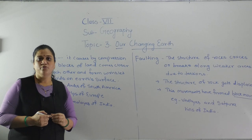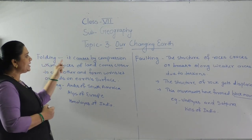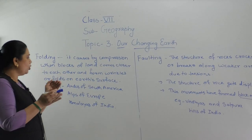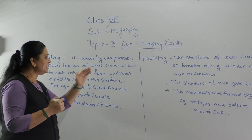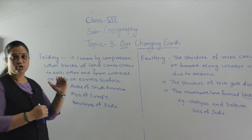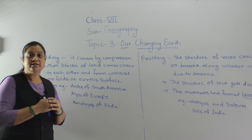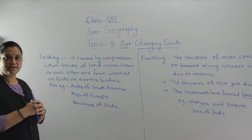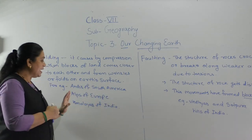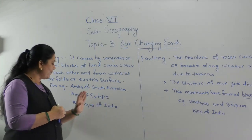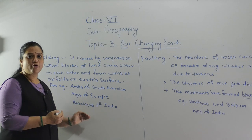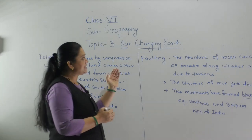Folding is caused by compression when blocks of land come closer to each other and form wrinkles or folds on the earth's surface. Examples of folding are the Andes of South America, the Alps of Europe, and the Himalayas of India. These landforms are formed because of the folding structure.